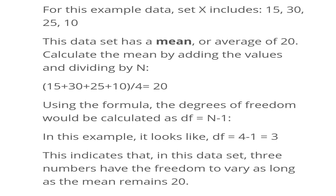Dividing by 4 gives the answer 20. Then you find the degree of freedom. N equals 4 samples, so the degree of freedom is 4 minus 1, which equals 3. This indicates that in the given data set of 4 observations, 3 samples have the degree of freedom to vary with the average mean of 20. When that mean remains 20, there are chances for 3 samples to get varied. That is the meaning of degree of freedom.